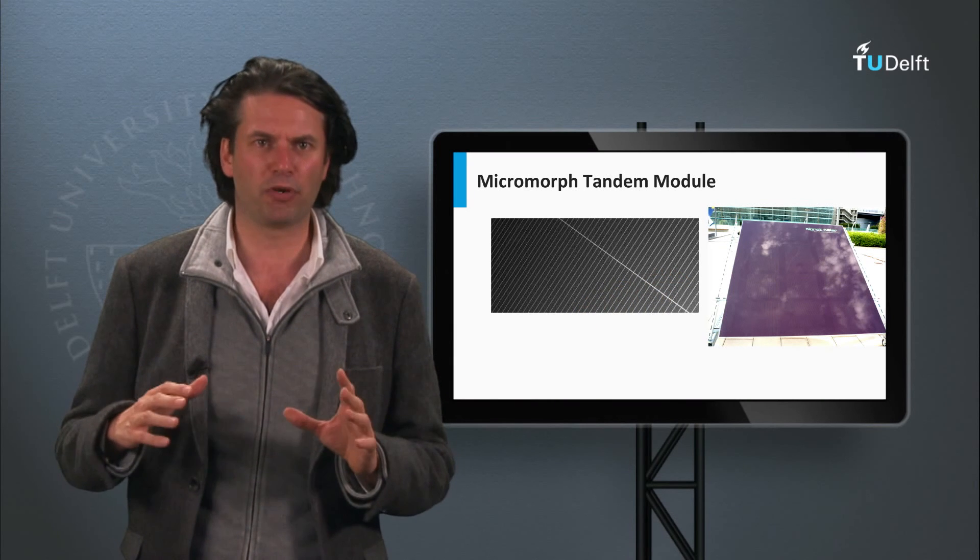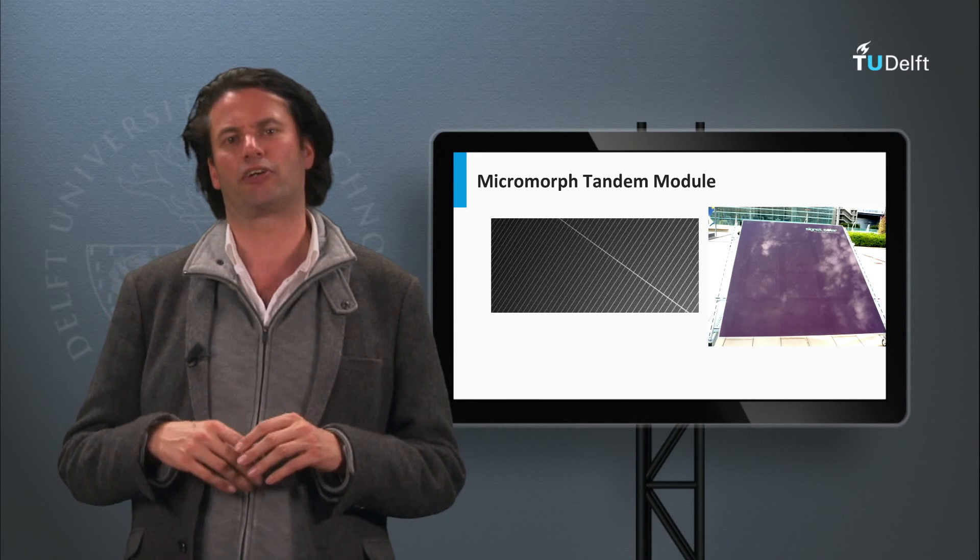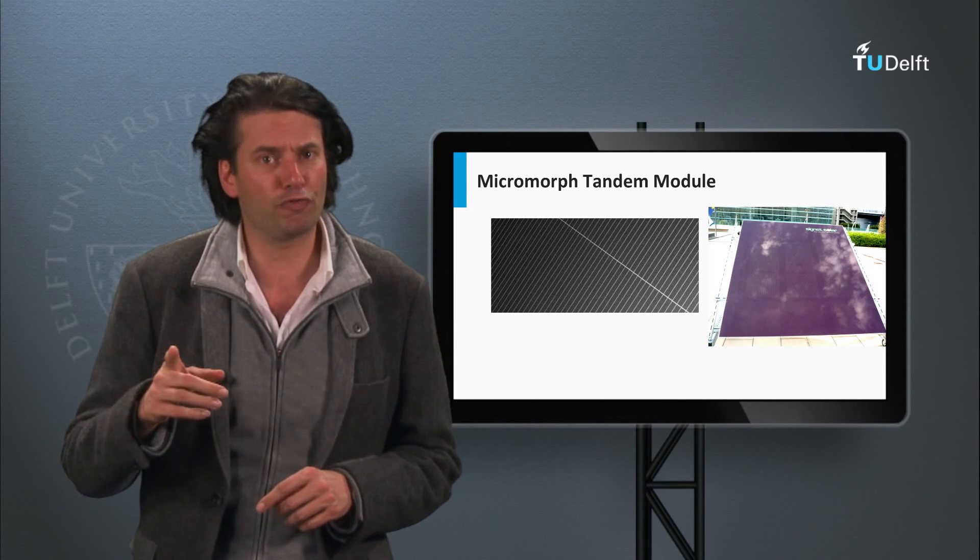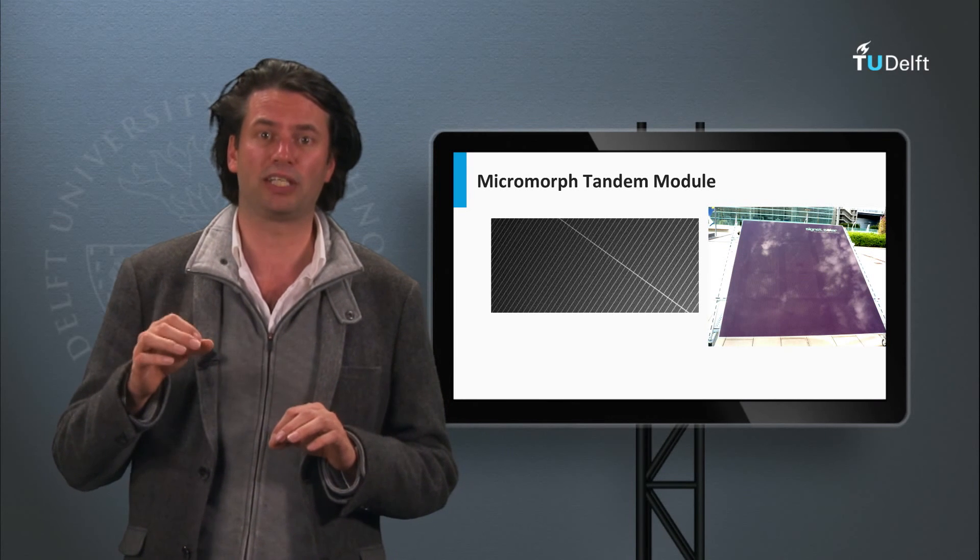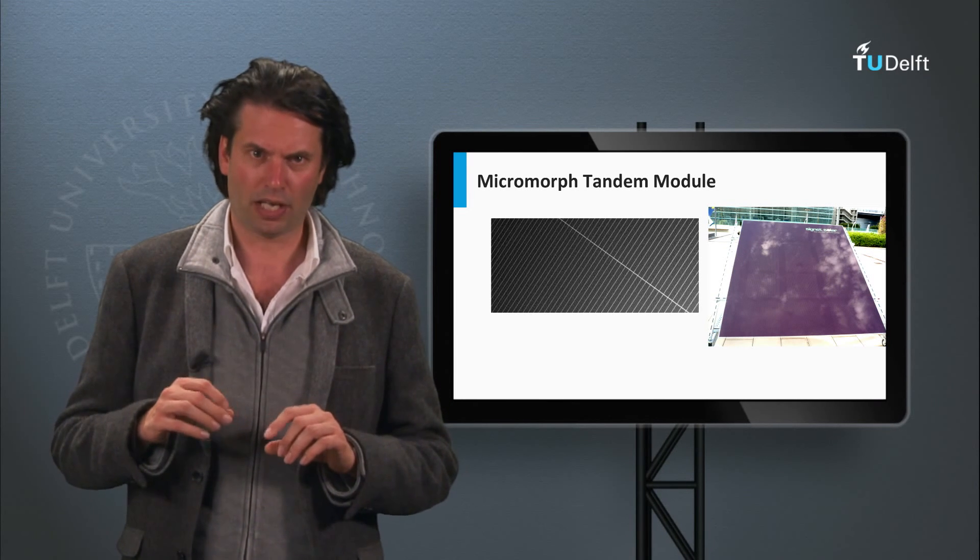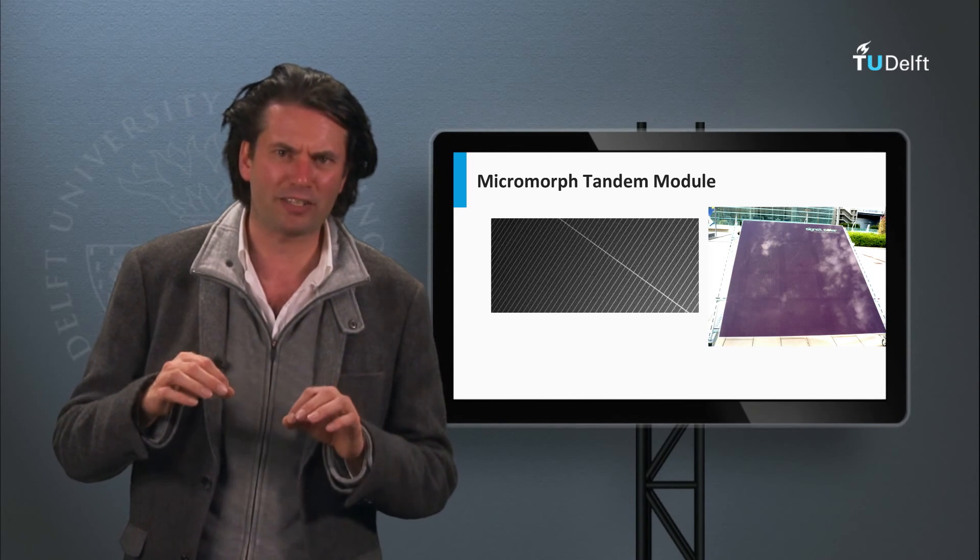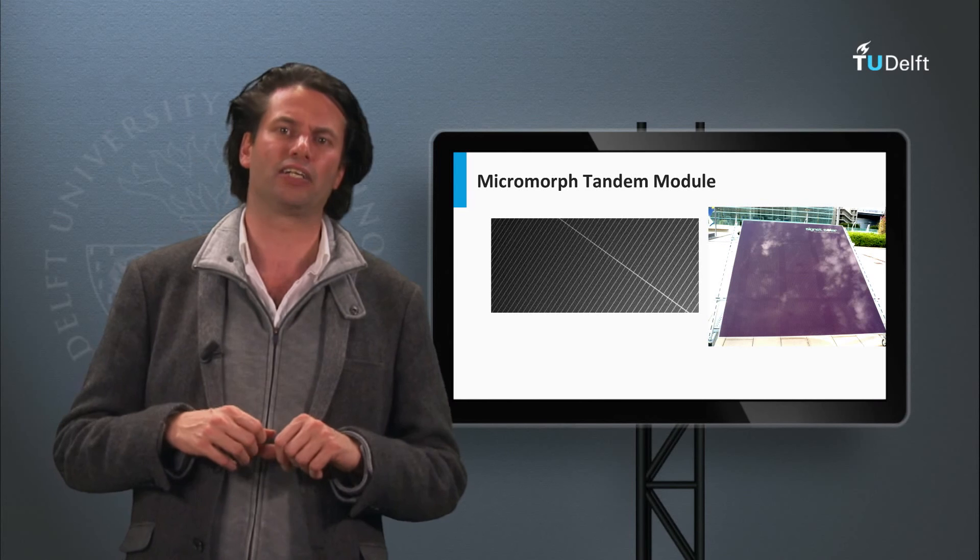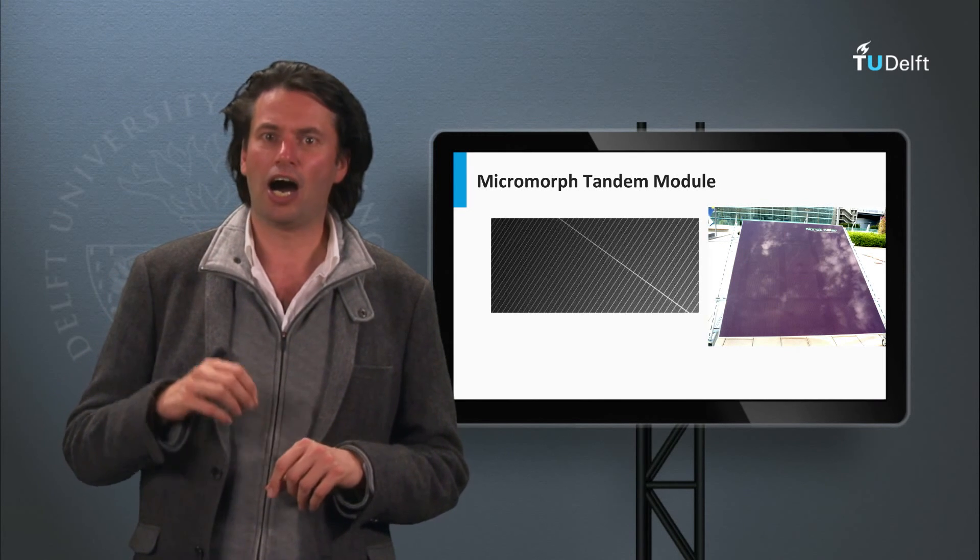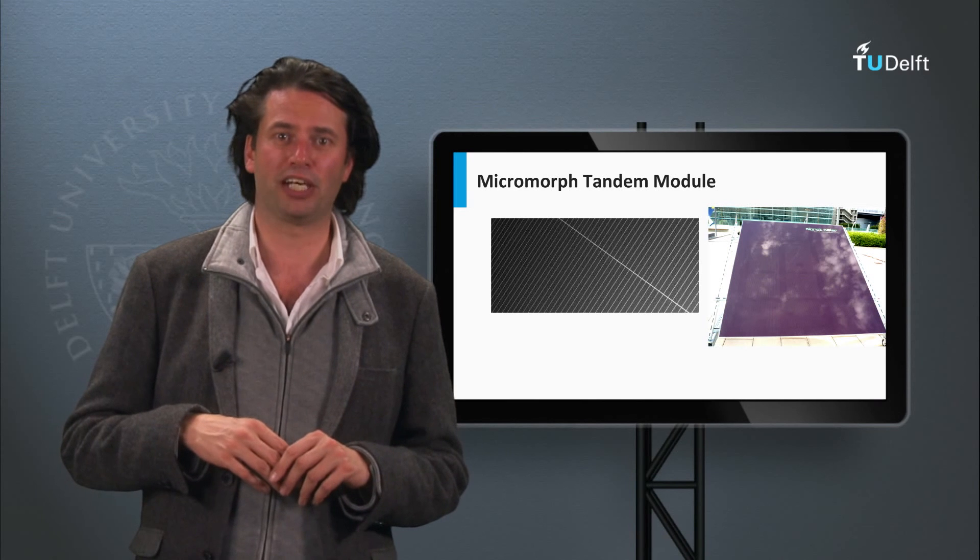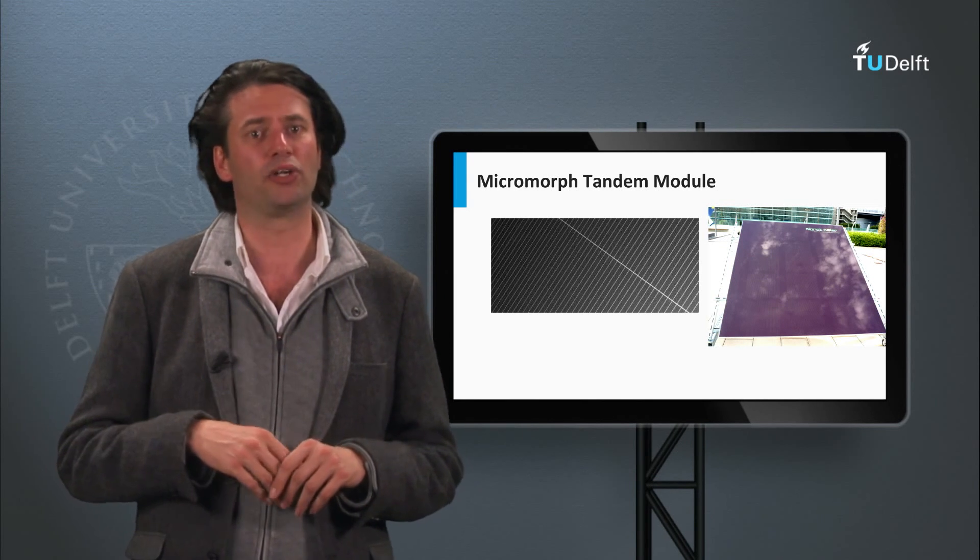Here you see a picture of a micromorph tandem module. You can see the various solar cells and the laser scribes. The open circuit voltage of the module is determined by the number of solar cell strips that are connected in series. Note that shading effects on this type of module is different from that of wafer-based crystalline silicon solar cells. The best module efficiencies are in the order of 11% as achieved by companies like Tokyo Electron, Panasonic, and Kaneka.